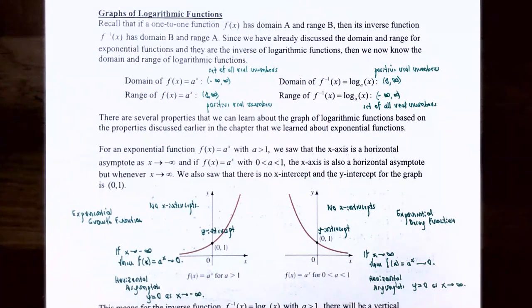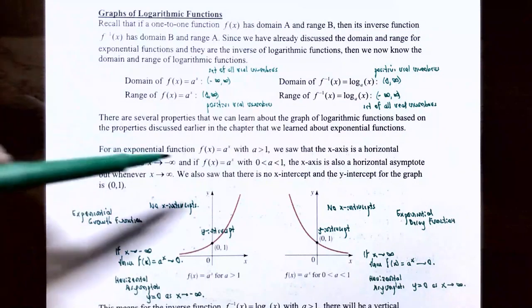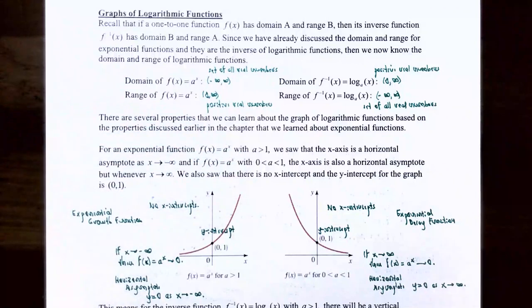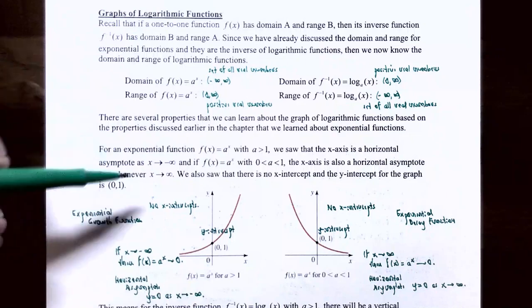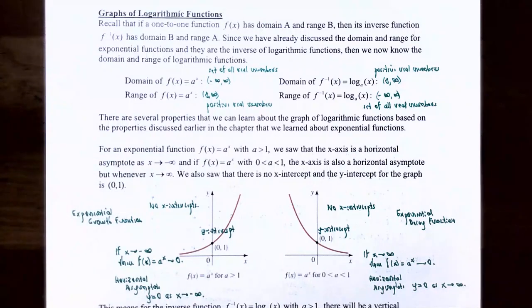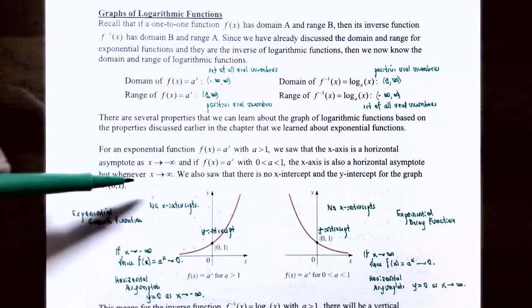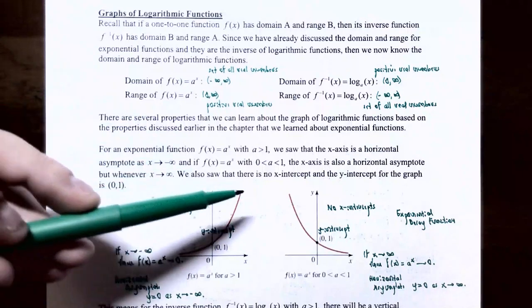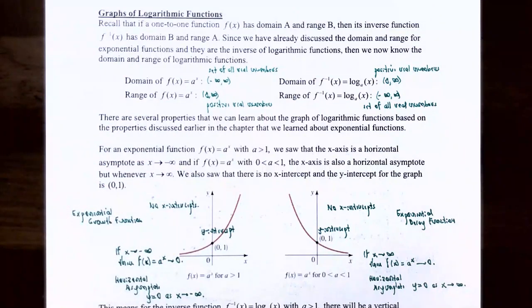There are several properties we can learn about the graph of logarithmic functions based on properties of exponential functions. Recall that for the exponential function f of x equals base a to the x, if a is greater than 1, the x-axis is a horizontal asymptote, y equals 0, as x approaches negative infinity. And if the base is between 0 and 1, y equals 0 is a horizontal asymptote as x approaches positive infinity. There are no x-intercepts for an exponential function, and the y-intercept is at 0 comma 1.